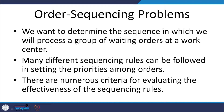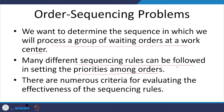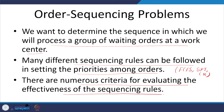All these are the objectives of the scheduling exercise and now in this particular session, we are going to see the scheduling activity with the help of some numerical examples. We want to determine the sequence in which we will process a group of orders at a work centre. Many different sequencing rules can be followed in setting the priorities among orders: FCFS, shortest processing time, critical ratio, etc. There are also different criteria for evaluating the effectiveness of these sequencing rules.